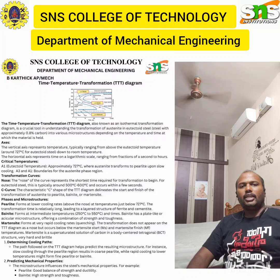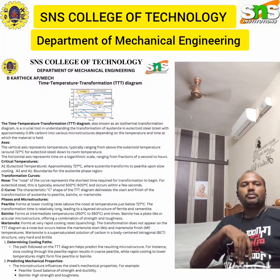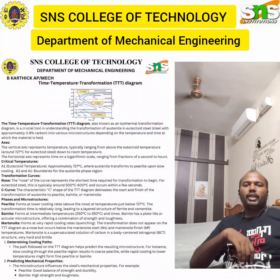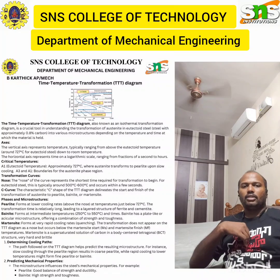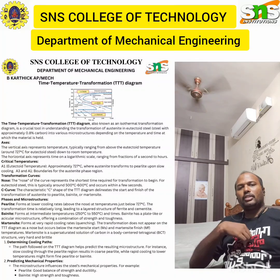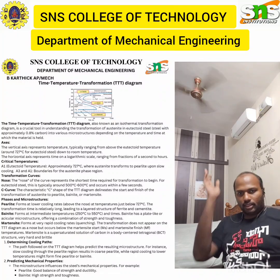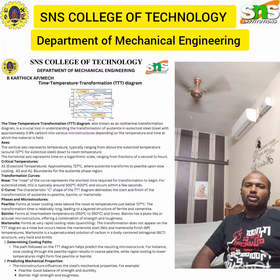The main usage of the TTT diagram is first for determining the cooling path. The path followed on the TTT diagram helps predict the resulting microstructure — for instance, slow cooling through the pearlitic region results in coarse pearlite, while rapid cooling at lower temperatures might form fine pearlite or bainite. The microstructure also influences the mechanical properties of steel — for example, pearlite gives a good balance of strength and toughness, while martensite gives high hardness and strength but low ductility.